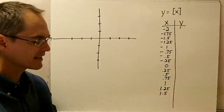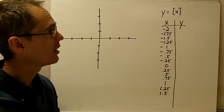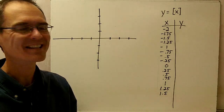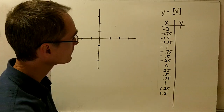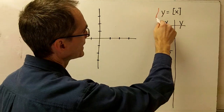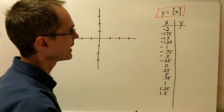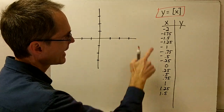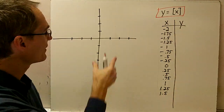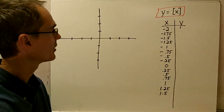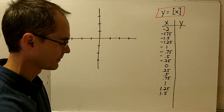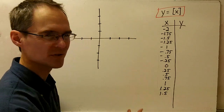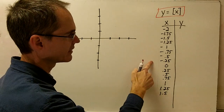Now let's look at what the graph of the greatest integer function looks like — here you'll see where it got its nickname, the step function. I'm going to take some values of x, plug them into y equals greatest integer of x, find corresponding y values, and plot them on our x-y axes. I'm going to start with zero and the positive numbers because they're easier, and then go back to the negative numbers.